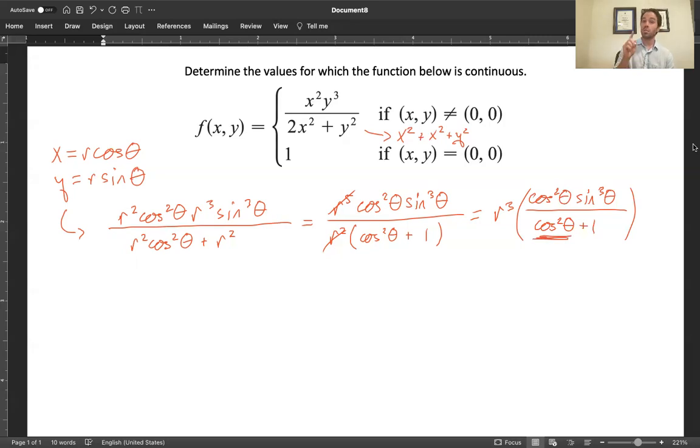Cosine squared, which is a positive number no matter what. Cosine squared and then plus one. So the bottom will always be a positive number. And that means that the top, no matter what it does, is not going to run into the sort of problem where you have a zero over a zero. So this is going to go towards zero as r goes to zero.